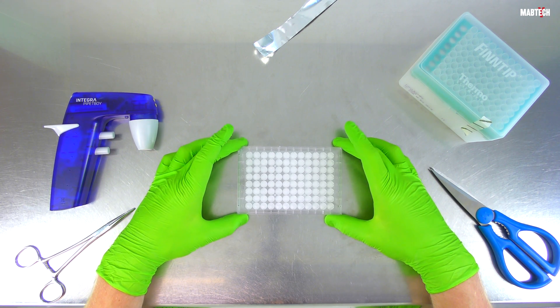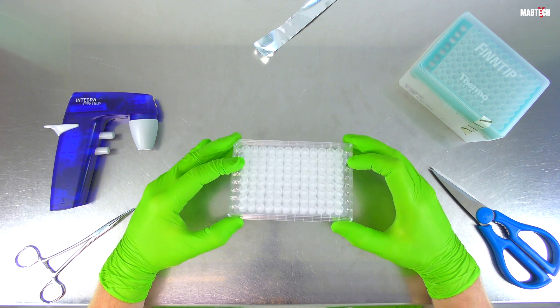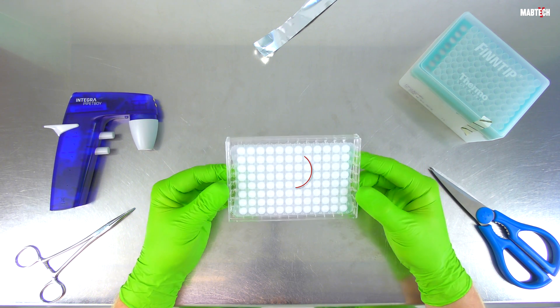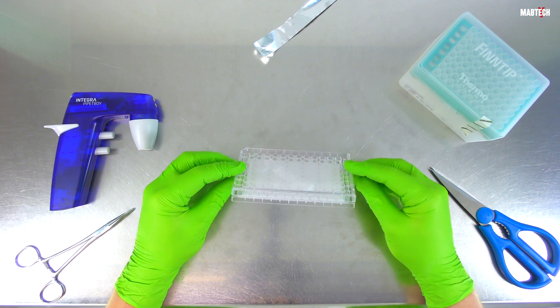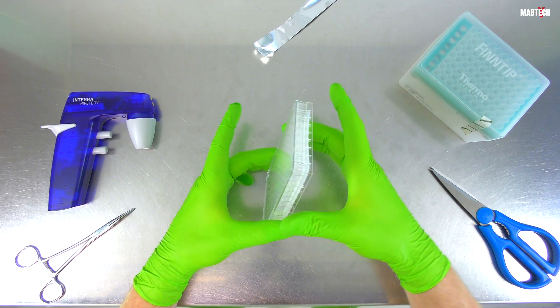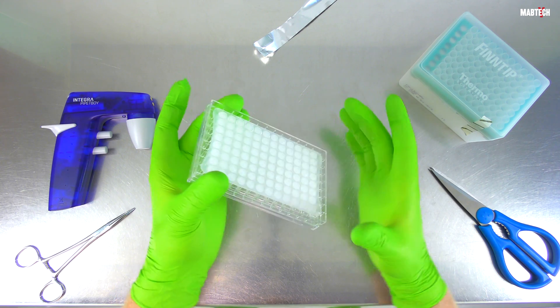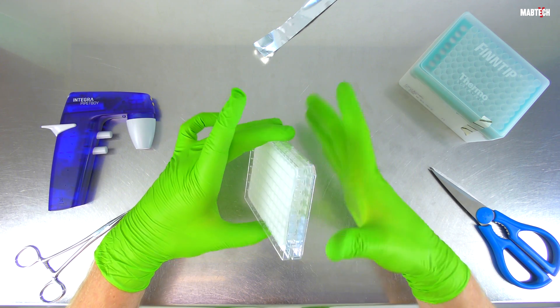ELIspot plates of the MSIP model, whether fresh-coated or pre-coated, come with an underdrain attached to the bottom of the plate. This is a piece of soft plastic put there by Millipore and relates to their use as filtration plates in other types of applications.